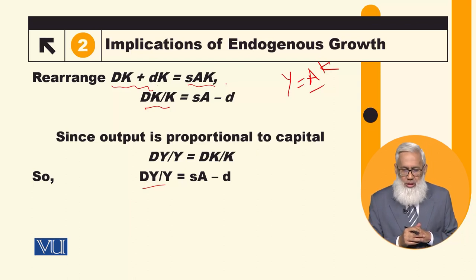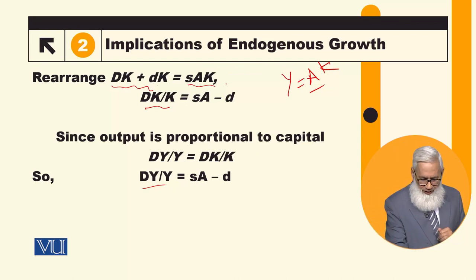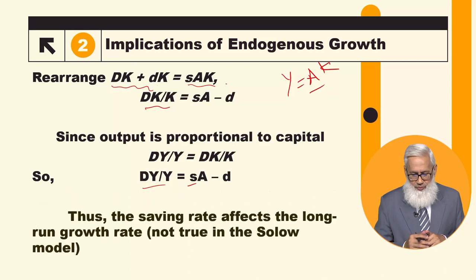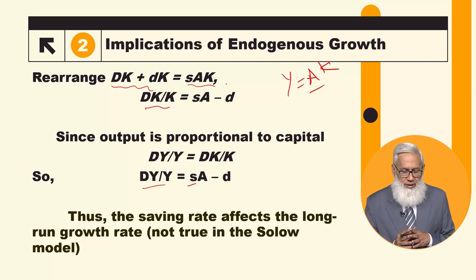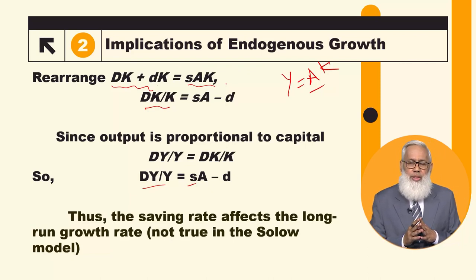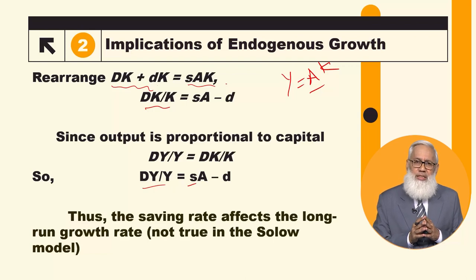So the growth rate of output is now determined by the saving rate. If you recall, this is a different result. In the Solow model, changing the saving rate cannot change the long-run growth rate of output. But here, in the Endogenous Growth Model, the output growth rate depends on the saving rate sa minus d.